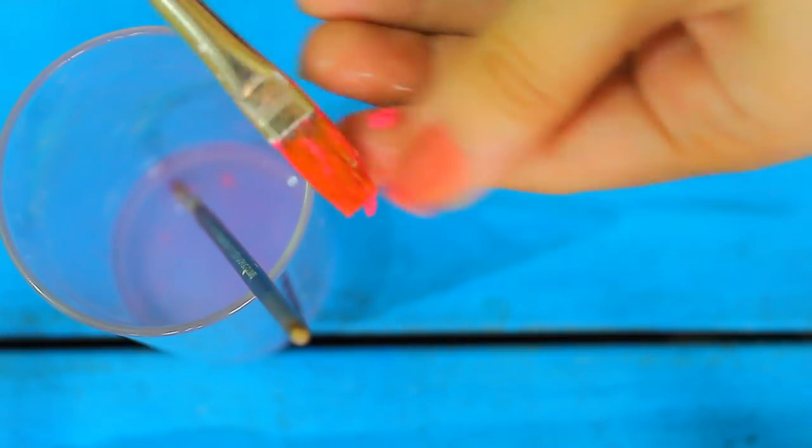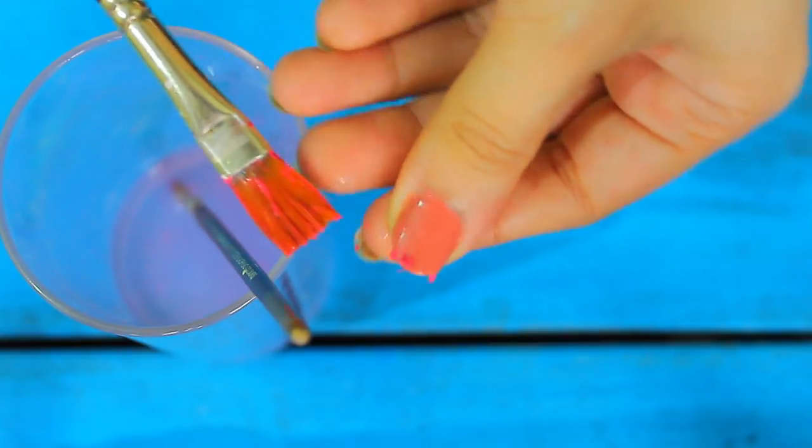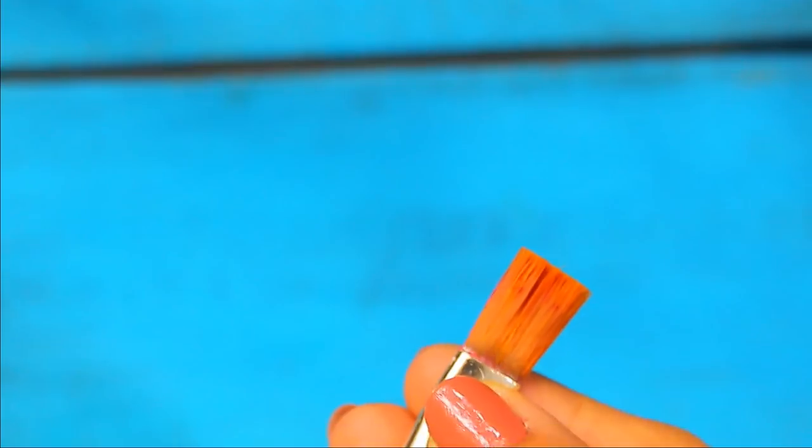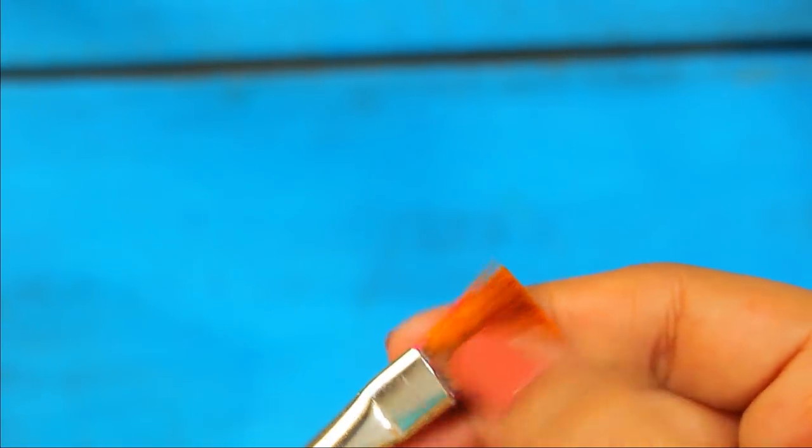If you see more colors in the brush, then dip them in water again and repeat the same step. And even after dipping, if you can still see some color particles in the brush...